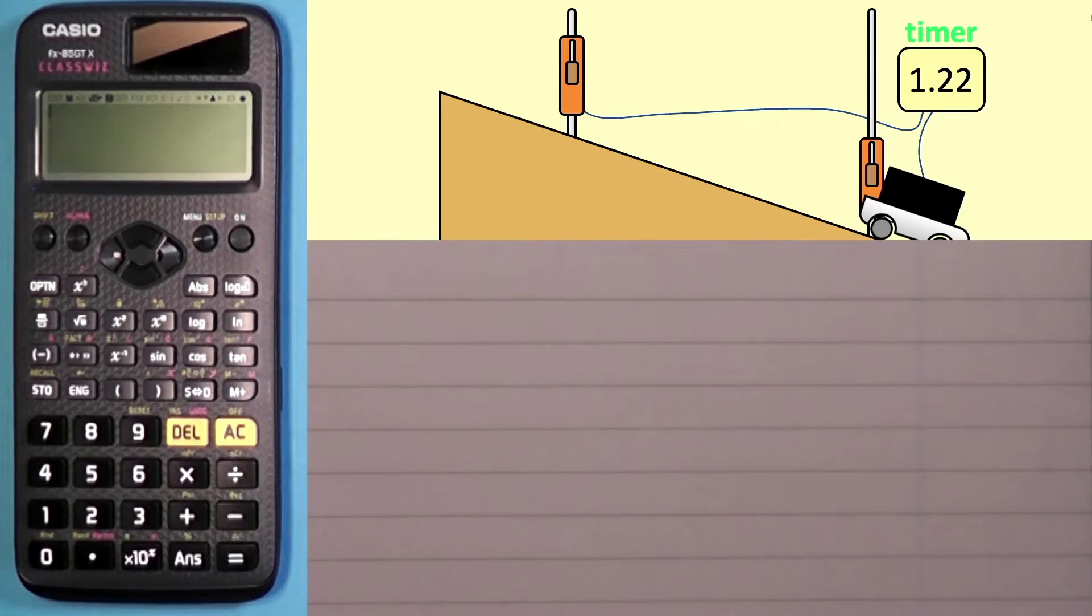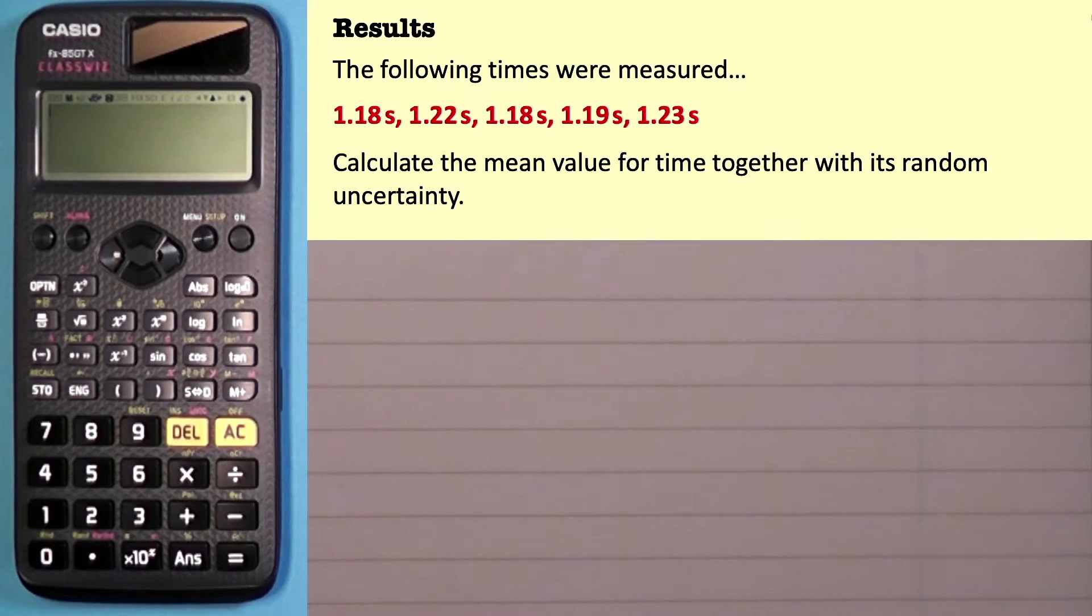Who knows? But for some reason it's taken a different time. So let's see if the experiment was repeated five different times and we got five different values: 1.18, 1.22, 1.18, 1.19, 1.23 seconds. We might get a question where we're asked to calculate the mean value of those times and also the random uncertainty.